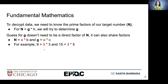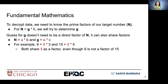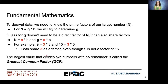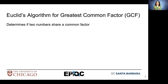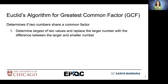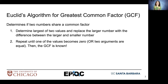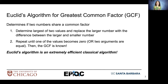For example, we can have 9 equal to 3 times 3 and 15 equal to 3 times 5. They both share a factor of 3, even though 9 is not a direct factor of 15. The largest value that divides two numbers with no remainder is called the greatest common factor — we'll call this the GCF. Euclid's algorithm can help us determine the greatest common factor for two values. When we use it, it helps us determine if two values share a factor. We determine the largest of two input values and replace the larger number with the difference between the larger and the smaller, repeating until one value becomes zero or the two are equal. At that point, the greatest common factor is known. Euclid's algorithm is incredibly useful and extremely efficient to implement classically.